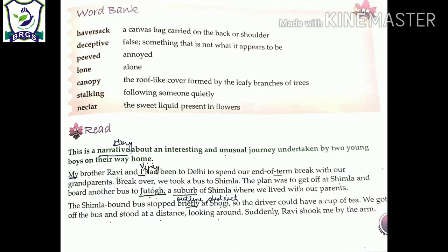This is a narrative about an interesting and unusual journey taken by two young boys on their way home. The narrator says: 'My brother Ravi and I had been to Delhi to spend our end-of-term break with our grandparents. Break over, we took a bus to Shimla. The plan was to get off at Shimla and board another bus to Jatog, a suburb of Shimla where we lived with our parents.' Jatog is an outlying district in Shimla, and it was their hometown where they lived with their parents.